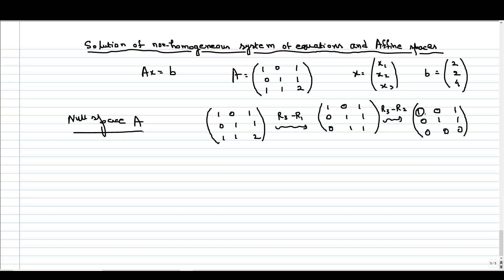So in the first two rows we have pivot elements. There is only one independent variable, and if we write this, we will get x1 plus x3 equals 0 and x2 plus x3 equals 0. So x3 is our independent variable coming from the set of real numbers. This is our null space of A.